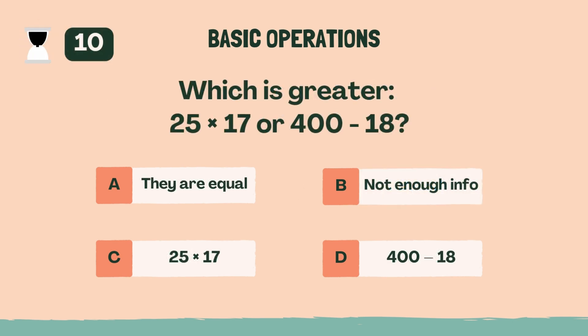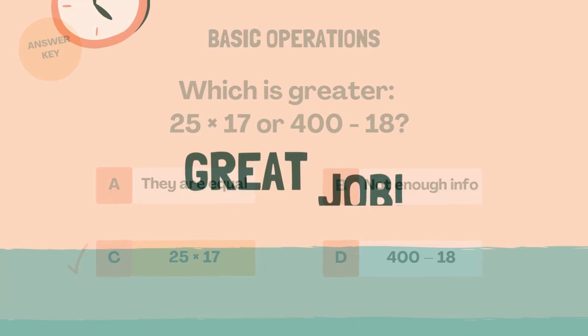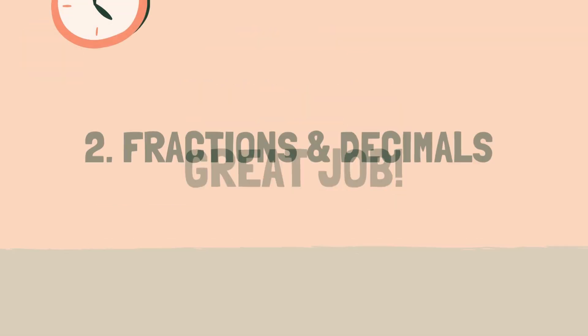Which is greater, 25 times 17 or 400 minus 18? C, 25 times 17. Great job. Let's move on to the next category.